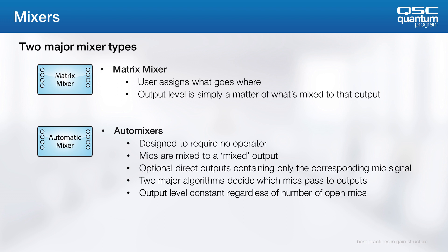At its base, the matrix mixer is relatively simple. It's user assigned, and the output level is simply a sum of what is mixed in that output. The auto mixer, on the other hand, requires no user operator, and the output level is constant regardless of the number of open mics.